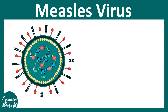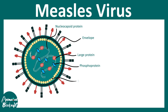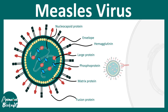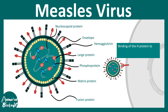Looking at the measles virus components, we can see the envelope, the nucleocapsid protein wrapping around the negative-sense RNA, large proteins, phosphoproteins, matrix proteins, fusion proteins, and hemagglutinin (HA) proteins. Hemagglutinin proteins are essential for docking to the cell membrane — specific membrane-bound receptors bind to the HA protein, allowing the virus to fuse with the plasma membrane of the host cell.